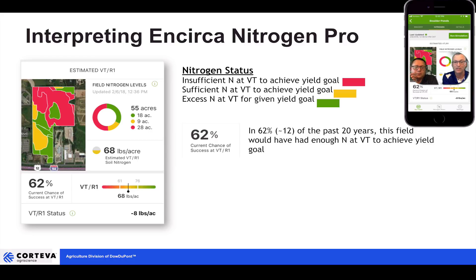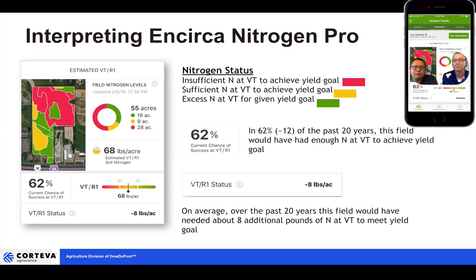As we look at the percentage — in this case it's saying 62% chance of success at VT to R1 — it's telling us that based on historical weather data, 12 of the past 20 years that field would not have had enough. It's not saying that we're not going to have enough, but based on historical weather, we're going to monitor pretty close and we may come up short at the end.